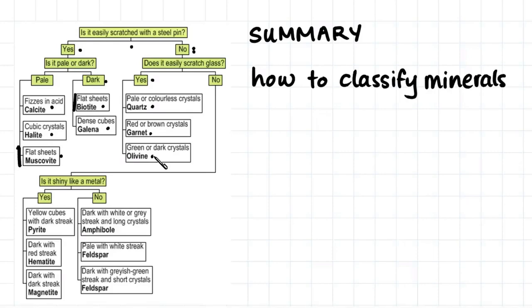If the mineral does not scratch glass, and the glass scratches the mineral, therefore the mineral is softer than glass. And then we might start to look at the lustre of the mineral. Does it have a shiny or metallic lustre? And what sort of colour is it? From that we can start to decide all the different types of minerals we have.